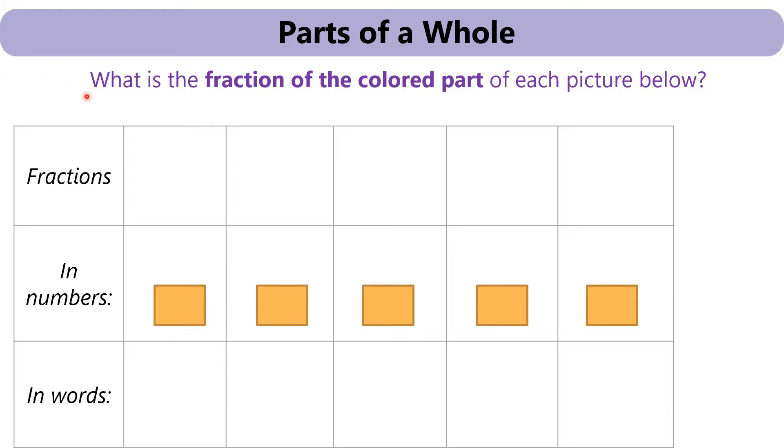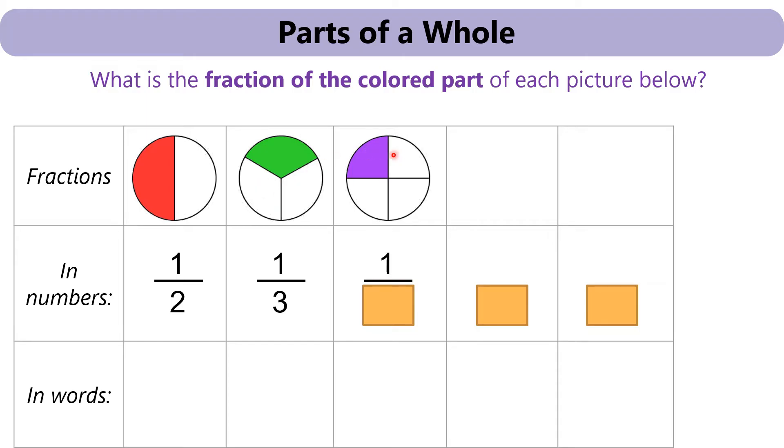Let's answer the following question. What is the fraction of the colored part of each picture below? Let's look at the first fraction. We have one colored. So we write one on top. How many total number of parts? We have two. We write one out of two. Next one. How many colored? There's only one out of one, two, three. Three parts. Next one. We have one colored again. And there are one, two, three, four parts. So we write one out of four.